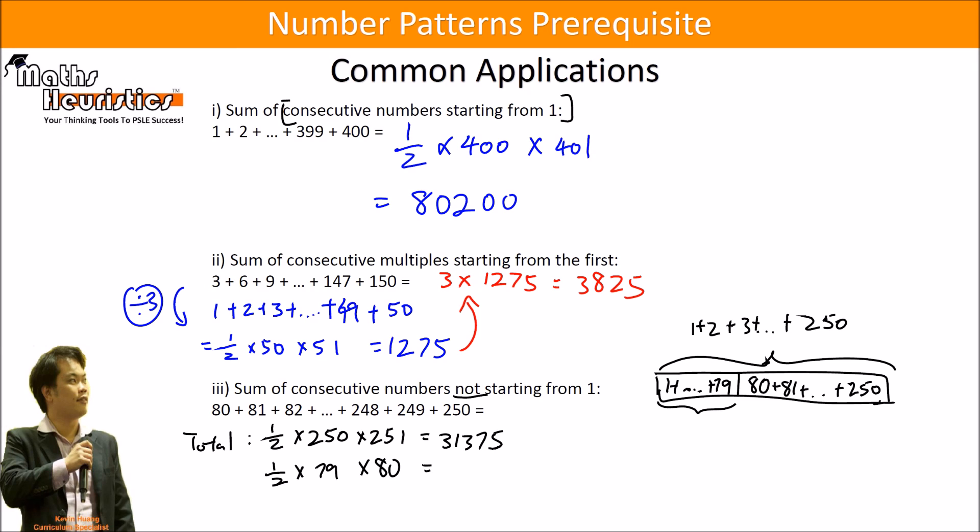Then this tail, 1 plus 2 plus 3 all the way up to 79, will be half times 79 times 80. So that will be 3160.